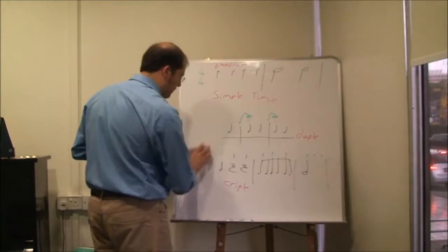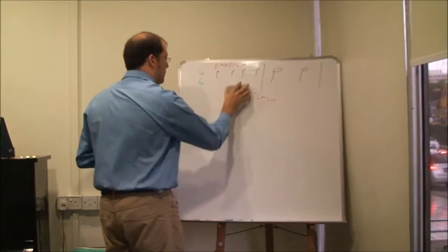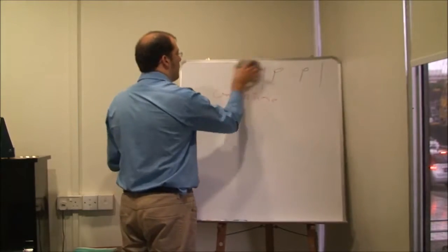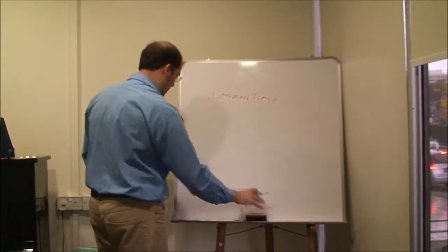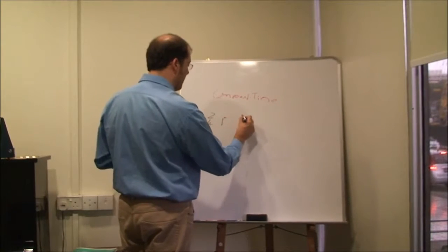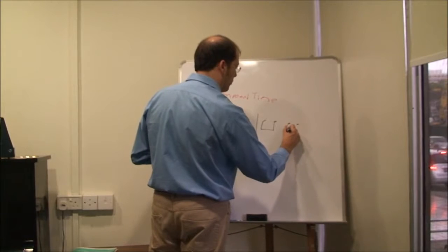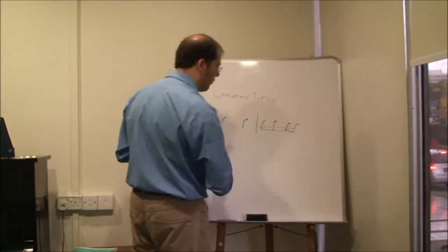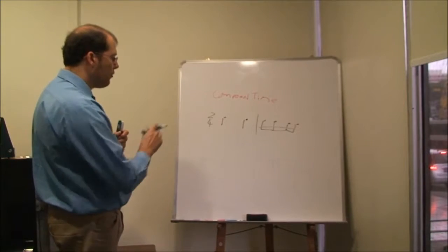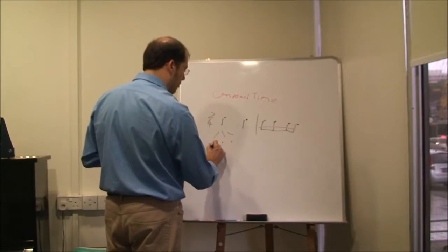Now life gets a little bit more complicated when we talk about compound time. To understand compound time, let's have a look at what's happening in simple time again. In simple time — let's use two-four as an example because that's easy — we had two beats, and each one of those beats subdivides into twos or into fours. That's simple duple time. Now, what if we wanted to have a time signature where each beat split into three subdivisions?